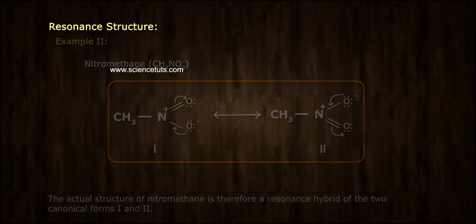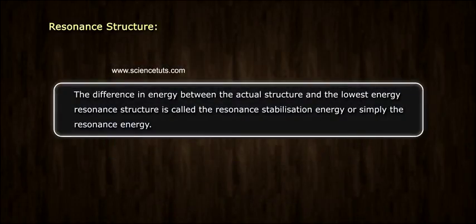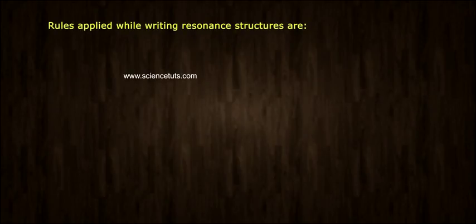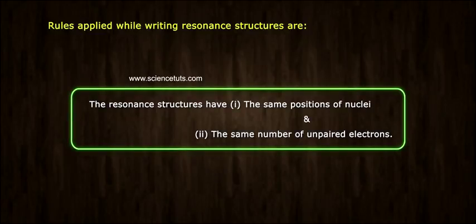The difference in energy between the actual structure and the lowest energy resonance structure is called the resonance stabilization energy or simply the resonance energy. Rules applied while writing resonance structures are: the resonance structures have 1. the same positions of nuclei, and 2. the same number of unpaired electrons.